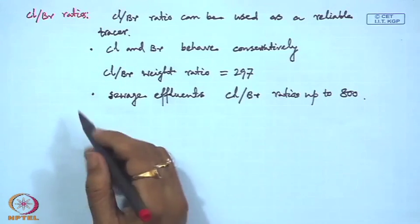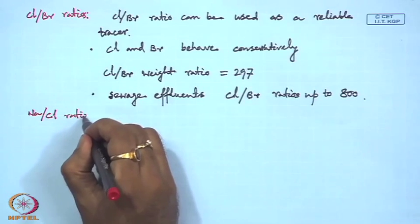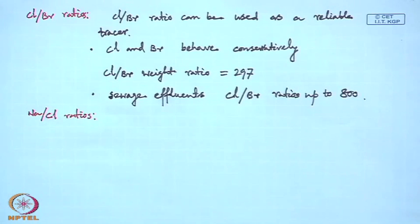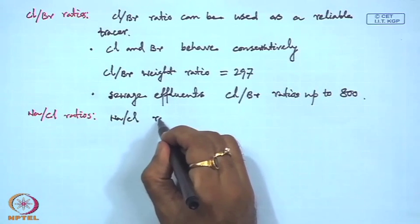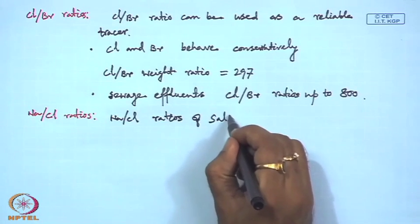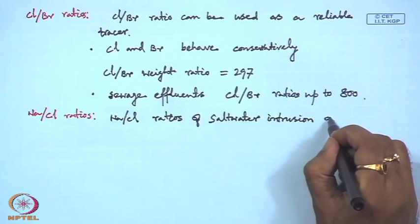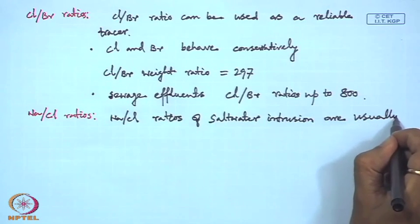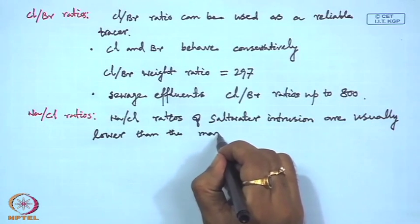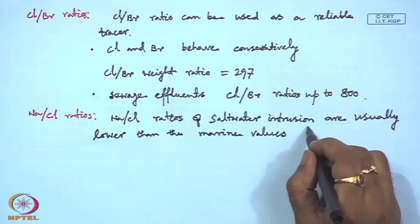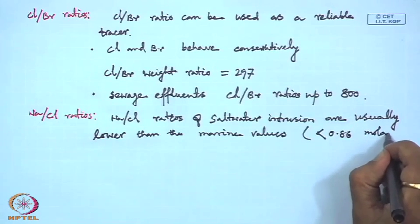The third parameter is the sodium-to-chloride ratio. Sodium/chloride ratios of salt water intrusion are usually lower than the marine values, which is less than a molar ratio of 0.86.